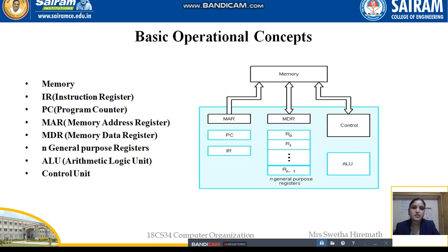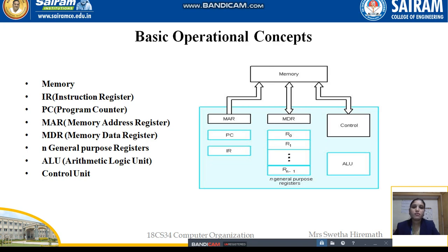The first register is IR — the Instruction Register — which stores the instruction currently being executed. The second is PC — the Program Counter — which points to the instruction that has to be fetched and executed next. After the current instruction is executed, the program counter keeps track of which instruction comes next. It is essentially a pointer.